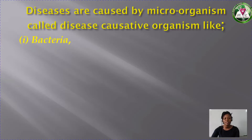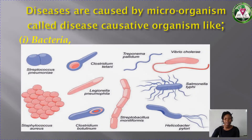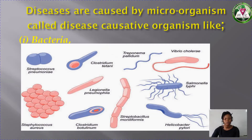Examples of these disease-causative organisms are: one, bacteria. We have several types of bacteria. You can see them in the picture. You have Streptococcus pneumoniae, Staphylococcus aureus, Clostridium tetani and so on. All these bacteria have particular diseases they can cause.